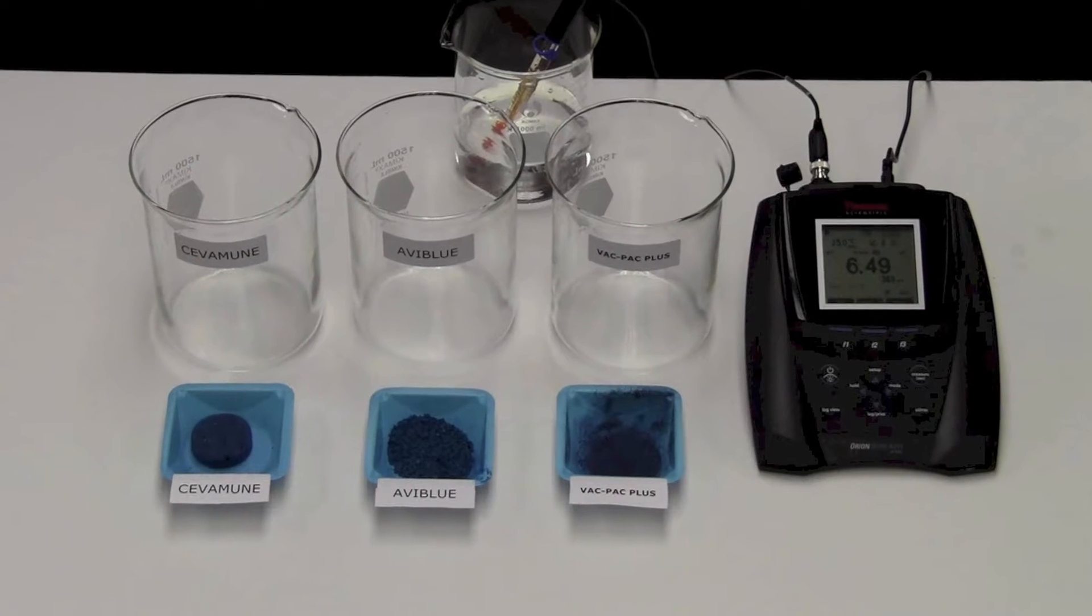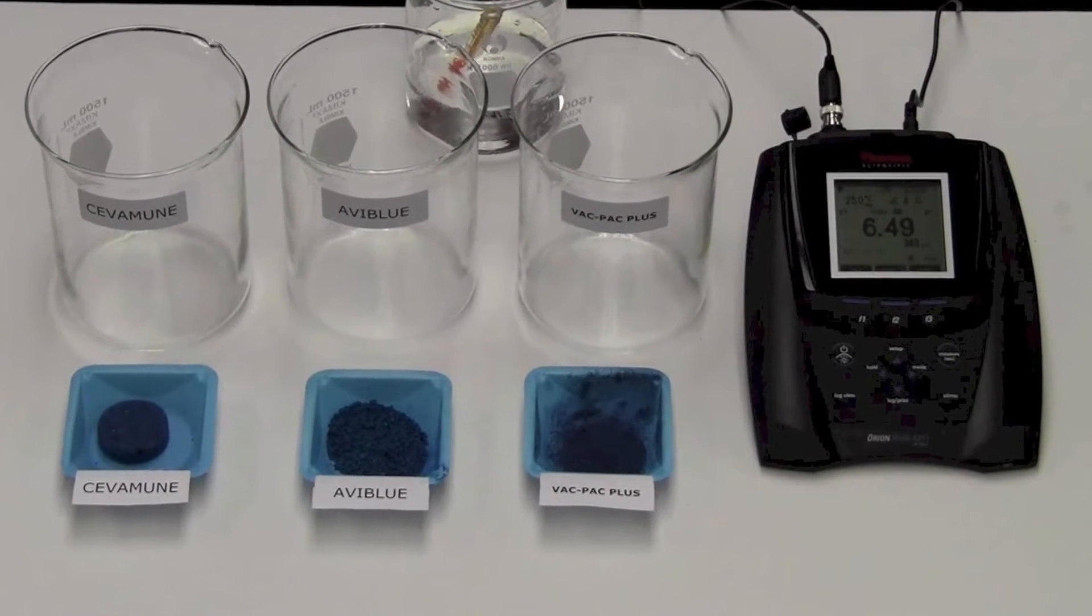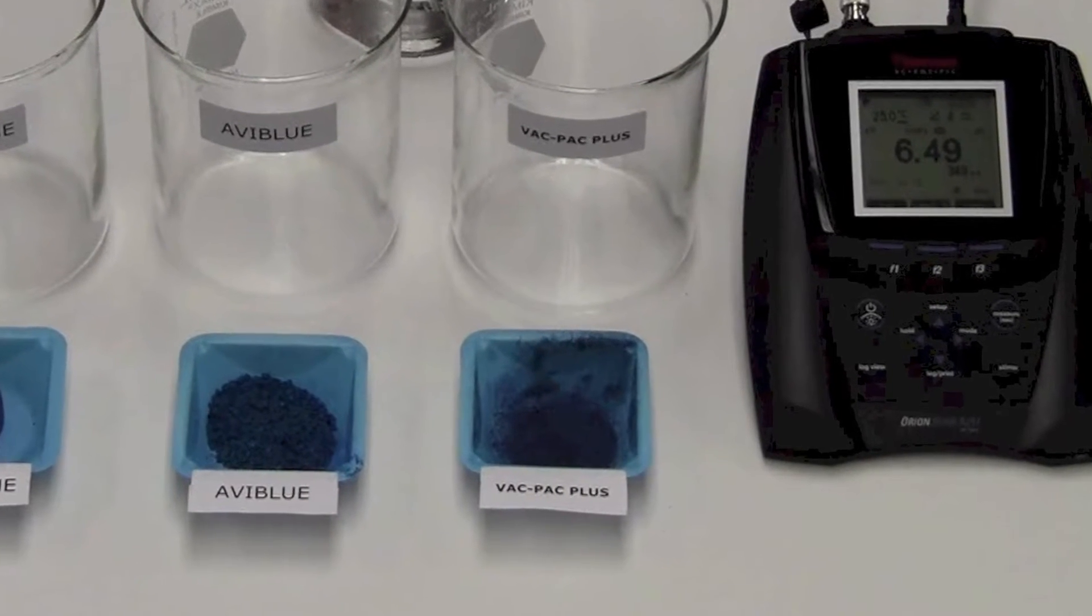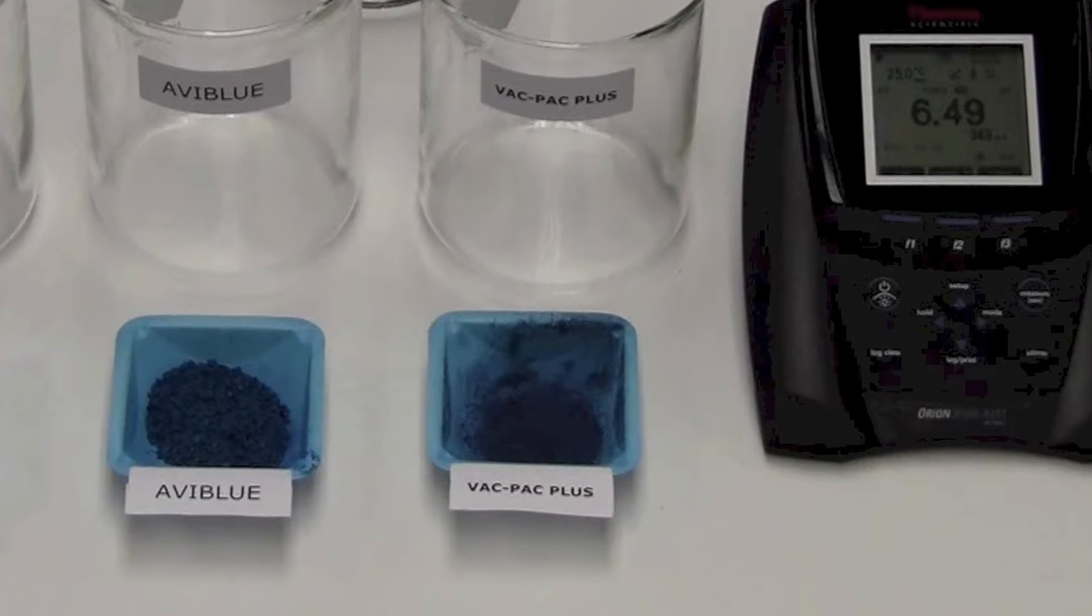The stabilizers include, on the right, the industry leader VacPak Plus, which is an instantly soluble granular powder used at 100 grams per 1,000 liters of drinking water.